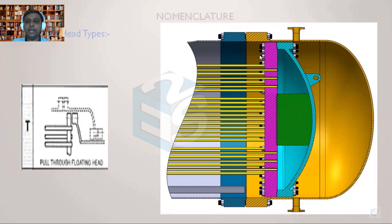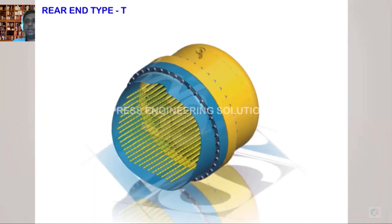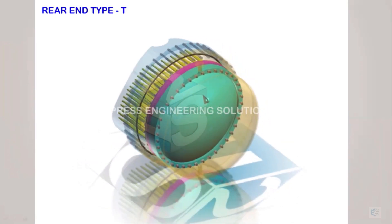The disadvantage is that the gap is much more, the shell ID has to be increased, and since the flange ID is increased, the flange thickness will also be on the higher side. This entire head assembly can be removed from the other side, causing higher shell diameter and hence higher cost compared to the S-type. This is the pull-through type of floating head — it is also called an internal type of floating head like the S-type, but it is pull-through and has no backing device.